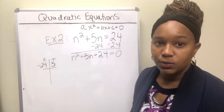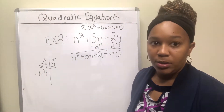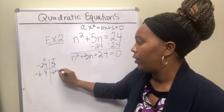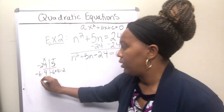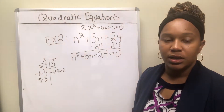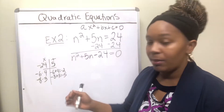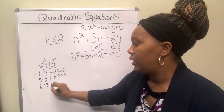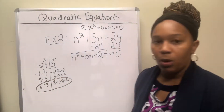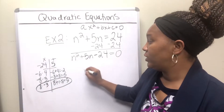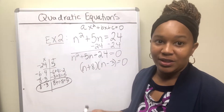So we want two numbers that multiply to give negative 24 but add to give 5. I created a chart to list factors of 24. 6 times 4 is 24, but since it's negative, one has to be negative — negative 6 plus 4 gives negative 2, not what we want. What about 8 times 3? Negative 8 plus 3 gives negative 5 — close, but the sign is different. Switching signs: 8 and negative 3. 8 plus negative 3 gives positive 5. So the factored form is (n plus 8)(n minus 3).